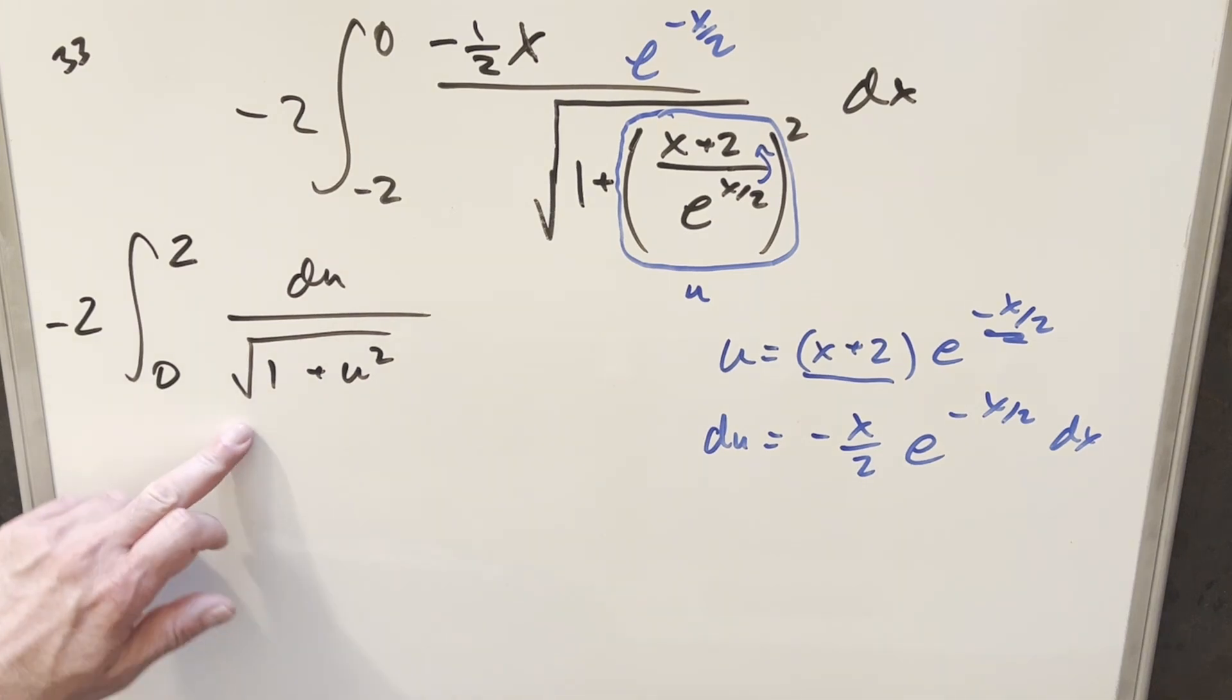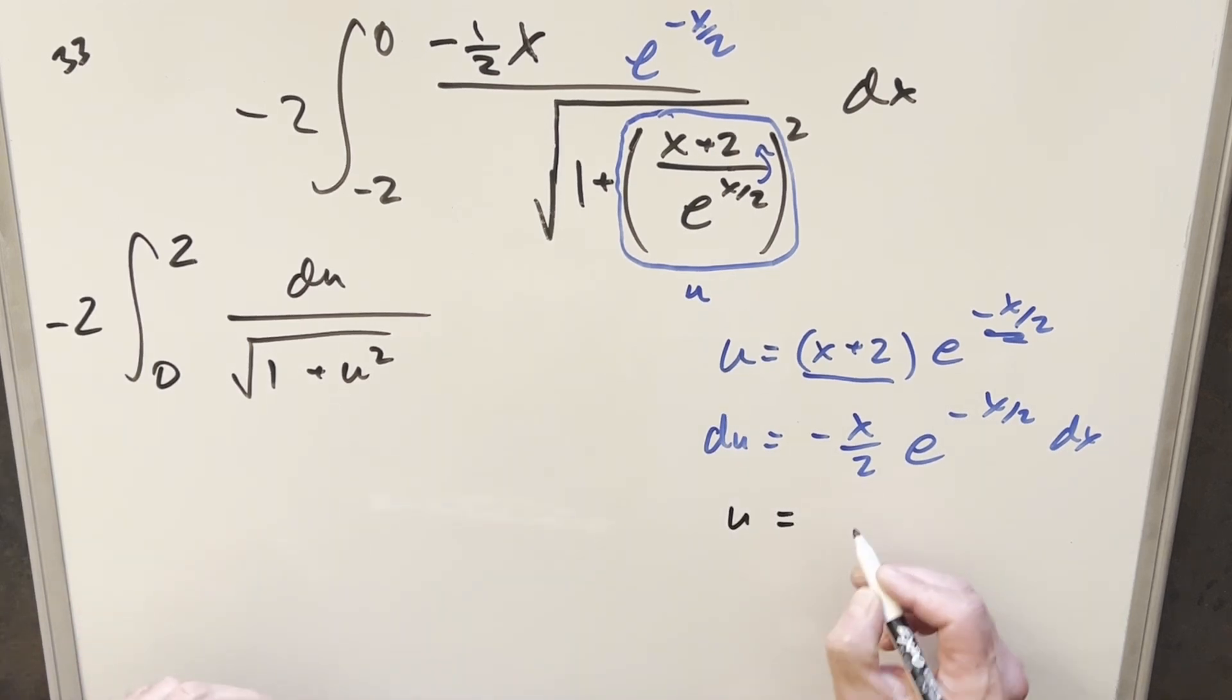And now from here, this is a pretty well-known integral. We could use a formula on it. We could do it a few different ways. I think I'm just going to do the straightforward thing. I'm just going to do the trig substitution on this. So for u, I'm going to set it equal to tan of t. Take a derivative. We get du equals secant squared t dt. And then also we can get a value for t, where t is just going to be arc tan of u.